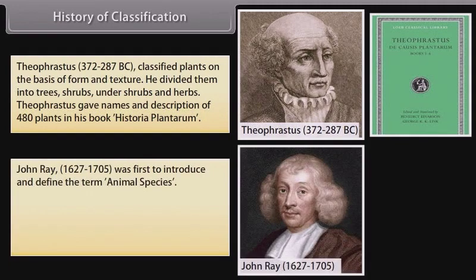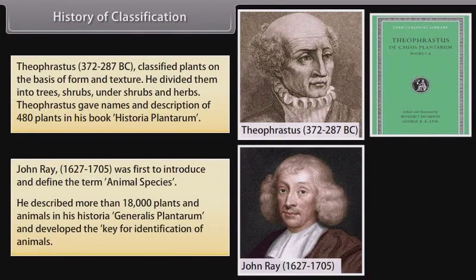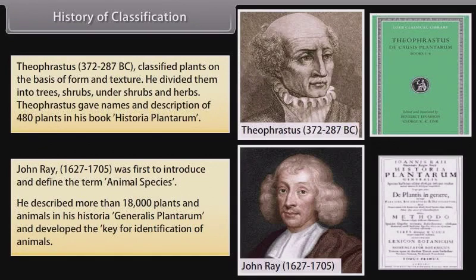John Ray (1627–1705) was the first to introduce and define the term animal species. He described more than 18,000 plants and animals in his Historia Generalis Plantarum and developed a key for identification of animals.